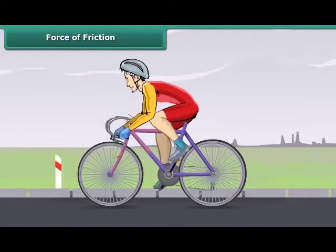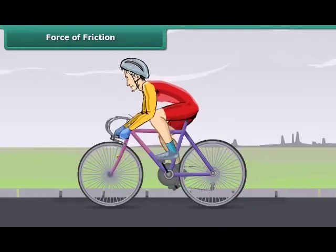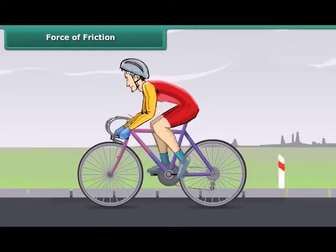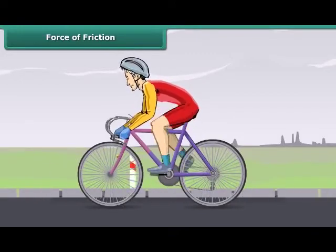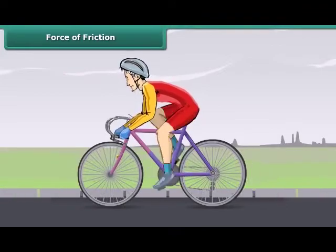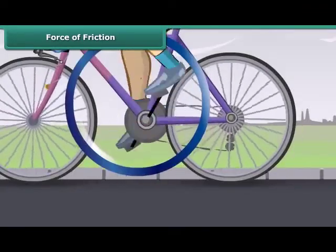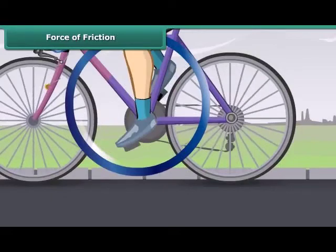Let's take an example from daily life. While moving on a bicycle on the road, you pedal the bicycle and it moves on and on. When you stop pedaling, the bicycle slows down and gradually comes to a stop. Why does this happen? This actually happens because of friction.